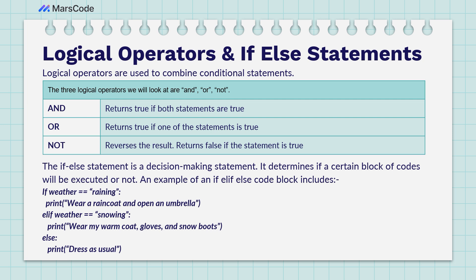An example of an IF-ELSE code block: if we have a variable called weather and that variable is initially set to a value like 'raining', we're saying that if it is equal to 'raining', it will print a message saying: wear a raincoat and open an umbrella.